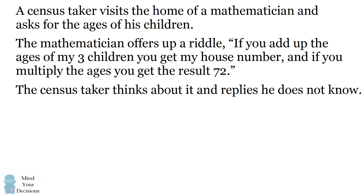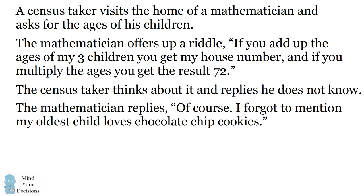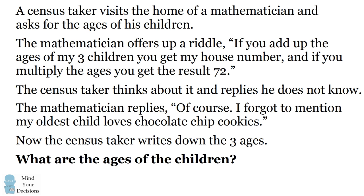The census taker thinks about it and replies he still doesn't know the ages of the children. The mathematician says, of course not, I forgot to mention my oldest child loves chocolate chip cookies. Suddenly, the census taker says he gets it and writes down the three ages. What are the ages of the children? Give this puzzle a try, and when you're ready, keep watching for the solution.